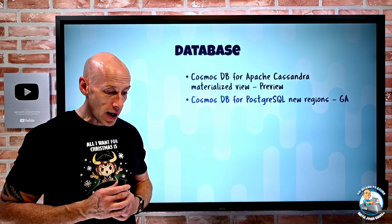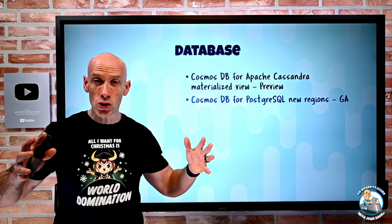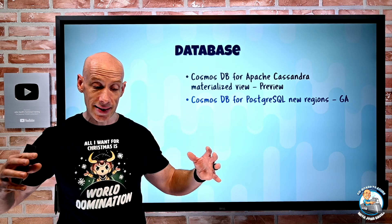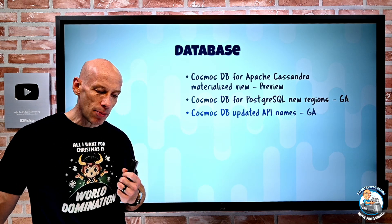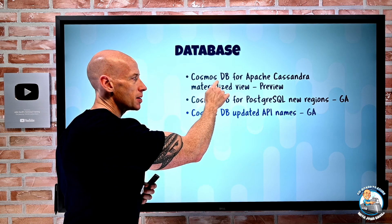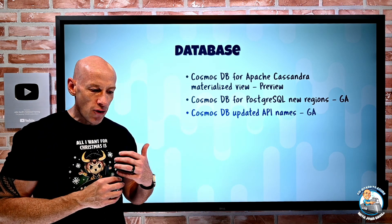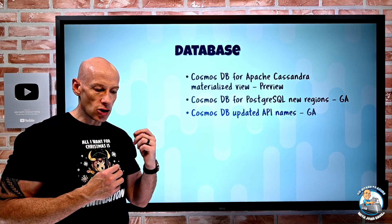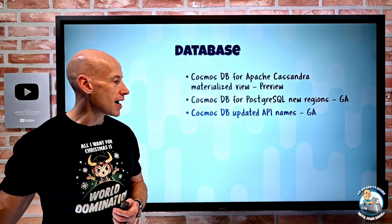Cosmos DB for PostgreSQL has new regions — it's now available in Sweden Central and Switzerland West. Remember, this replaces the old Hyperscale PostgreSQL and is built on the Citus extension for sharding, high performance, and high capacity. Cosmos DB has also updated several API names: the old CoreSQL API is now Azure Cosmos DB for NoSQL, and there's Azure Cosmos DB for MongoDB, for Table, and for Apache Gremlin — renaming the old terminology.